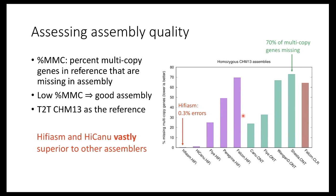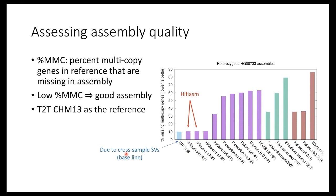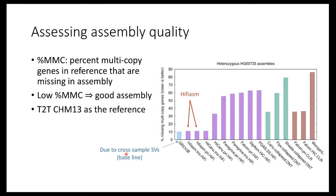Hifiasm and hifiasm-hic are far superior to all other assemblies on this metric, with a similar story for diploid samples. Because of this superior performance on human assembly, hifiasm has been chosen by the Human Pangenome Reference Consortium as the single assembler to assemble the first batch of samples. The N50 for most of these assemblies is around 50 megabases, and I want to note that every single assembly in this plot, even the worst one, is better than all other assemblies produced before 2019.